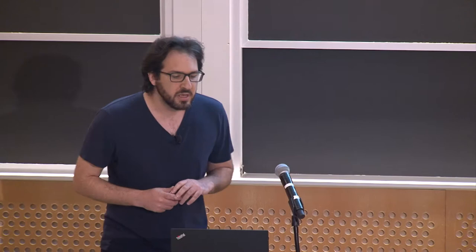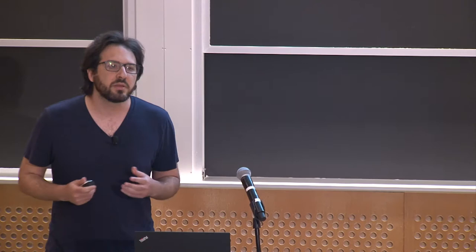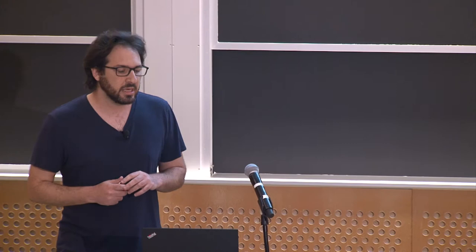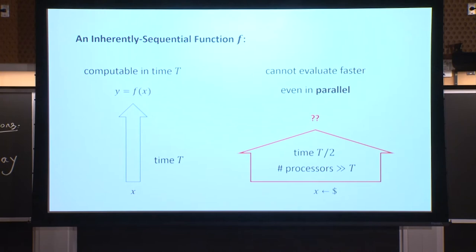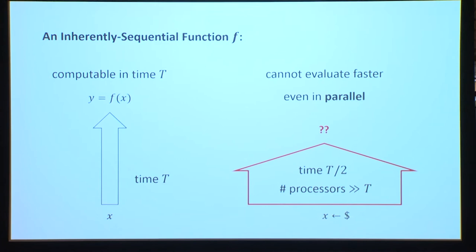Without formal definitions, just to convey the high-level idea: we say that a function f is inherently sequential if we can compute it in time t — given input x, we can evaluate output y in time t — but we can't evaluate it any much faster than that. So given a random input, no algorithm that runs in time t over 2 can compute the correct output. And importantly, this hardness holds even for parallel algorithms — even if your algorithm runs on multiple processors in parallel, it cannot compute the correct y in time t over 2.